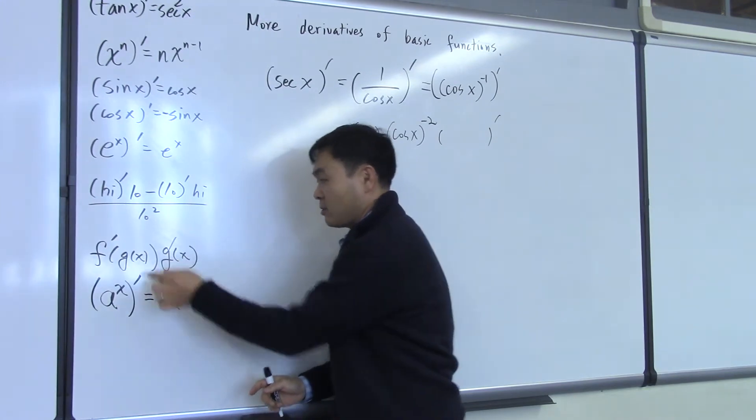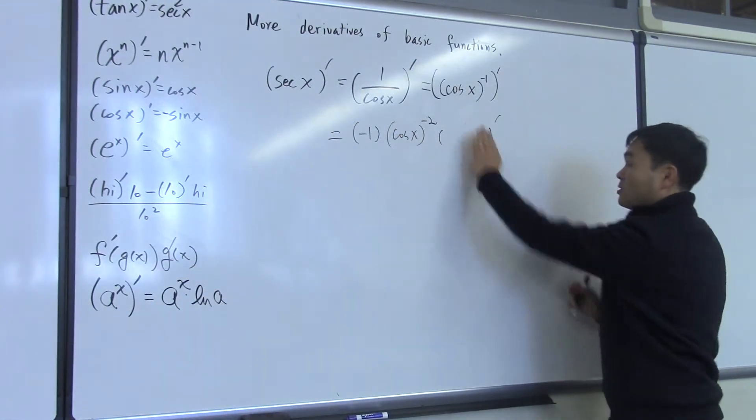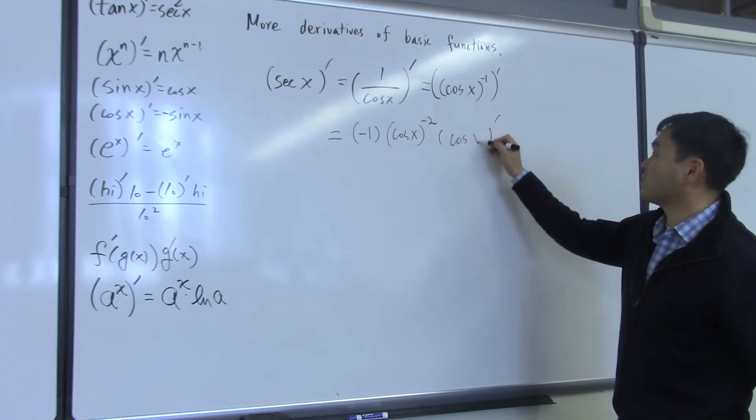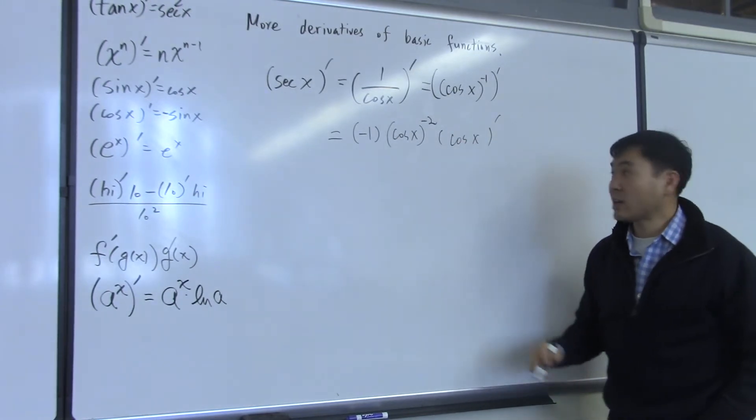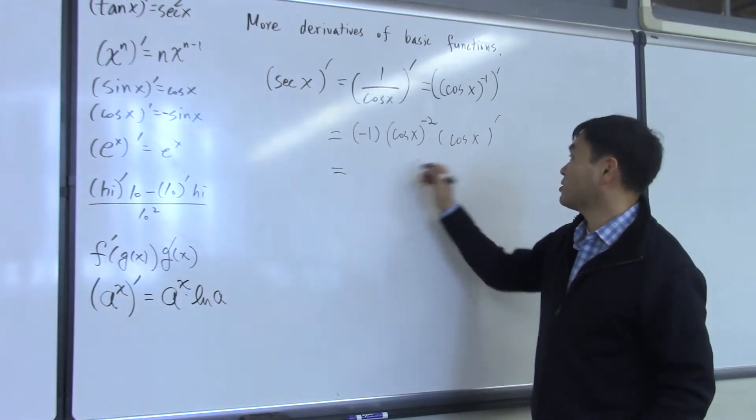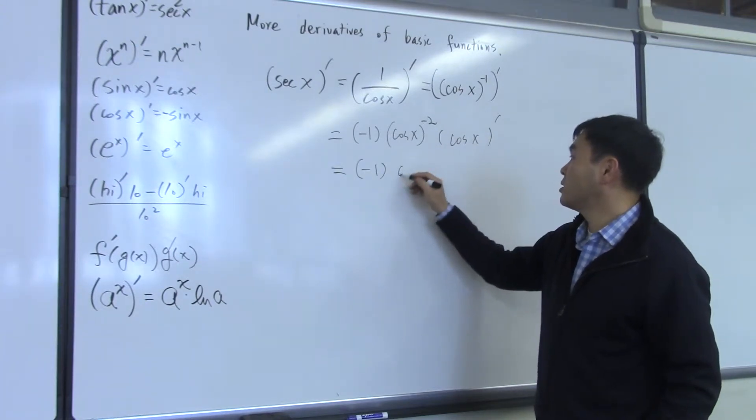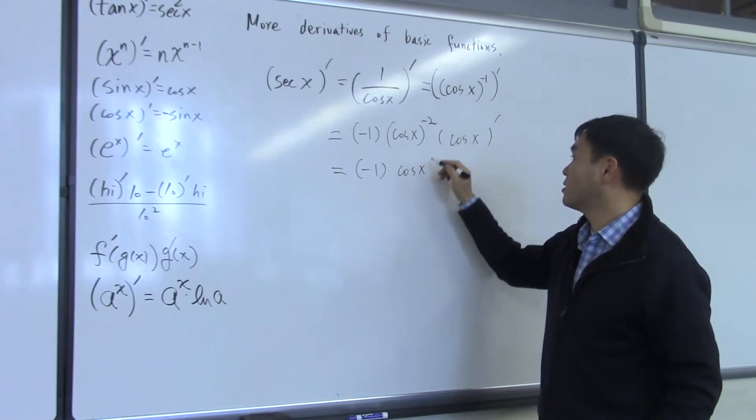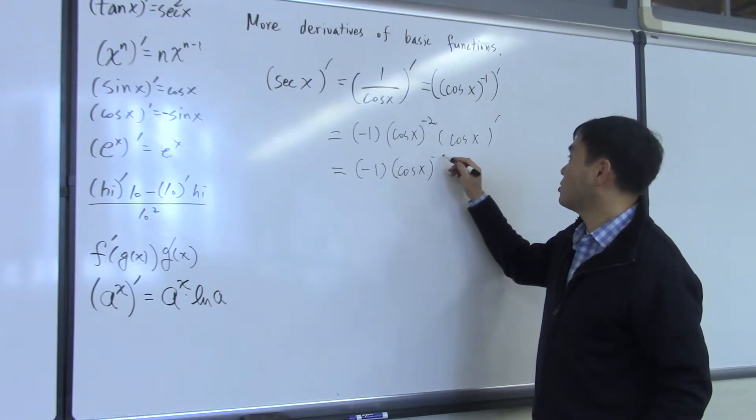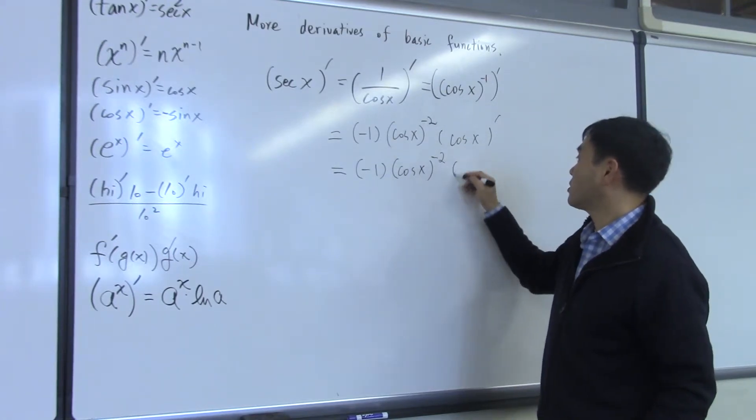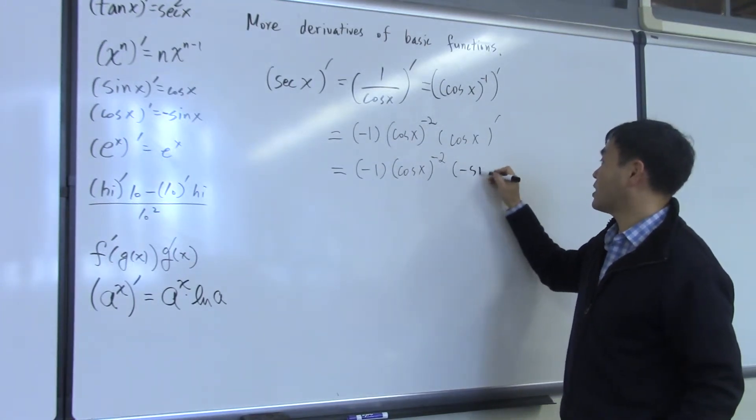Pull g(x) out and differentiate, right? So, you have to pull the inside function out and differentiate, which is cosine of x. What's the derivative of cosine x? Negative sine. So, it's negative one, cosine x, negative two, times negative sine x.